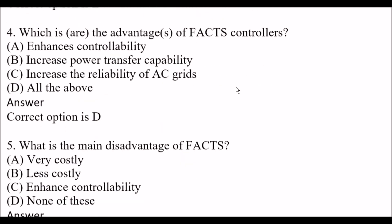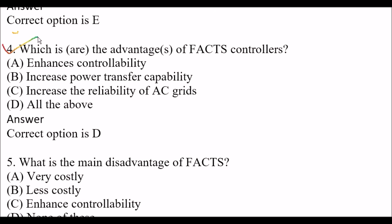Next question: Which are the advantages of FACTS controllers? Option A: Enhanced Controllability. Option B: Increase Power Transfer Capability. Option C: Increase the Reliability of AC Grids. Option D: All of the above. The right answer is Option D, all of the above. Enhanced Controllability, Increased Power Transfer Capability, and increased reliability of AC grids are all advantages of FACTS controllers.